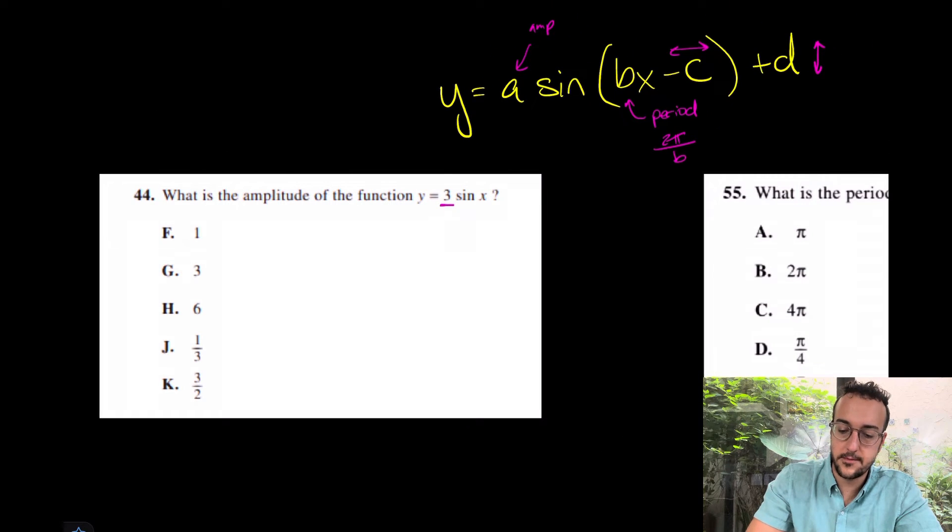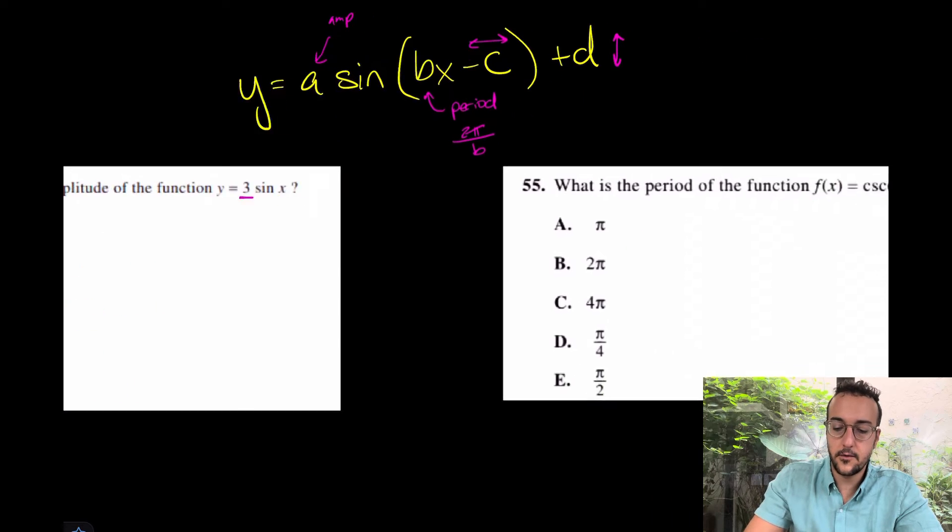What's the A value? Again, zooming out to go back to my formula, wasn't the A the amplitude? In that case, what's the answer for number 44? G, that took seconds. Let's take a look at another one.